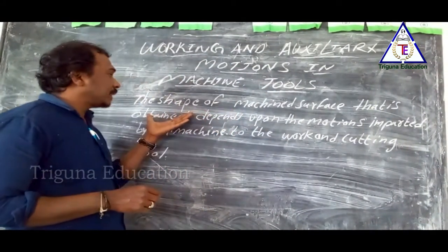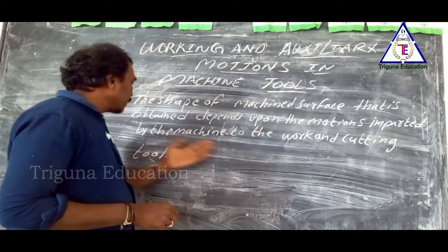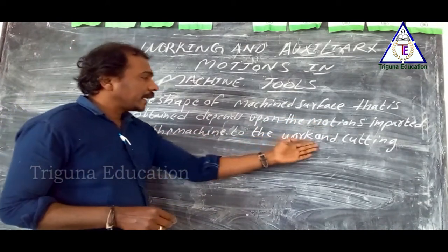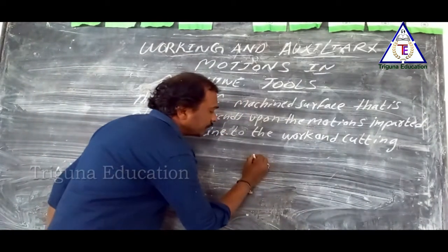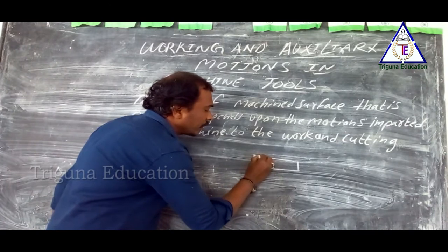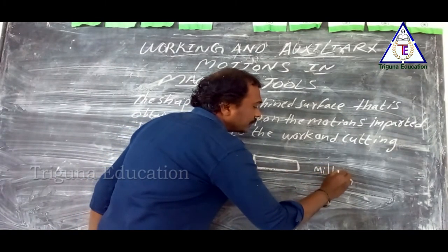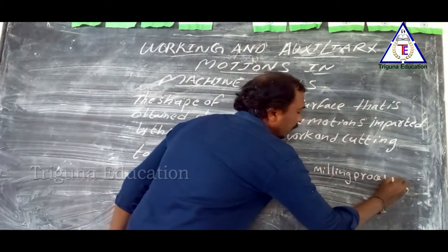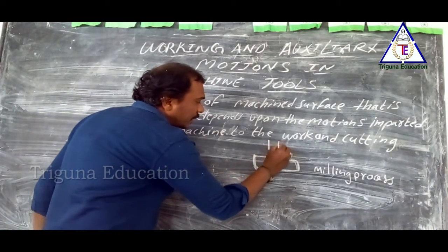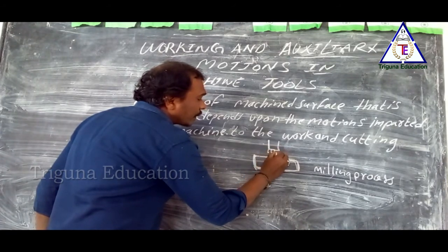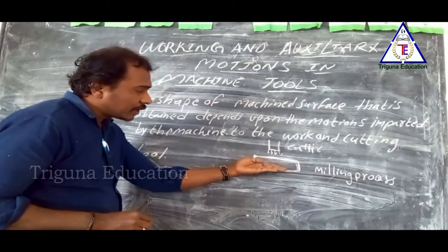The definition is: the shape of the machine itself — that is, obtainment — depends upon the motions imparted by the machine to the work and cutting tool. So, the work piece is an example. It is a flat work piece. The milling process is used to work on a work piece surface, where we remove material. It is a milling process — we can remove material from the work surface.